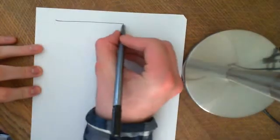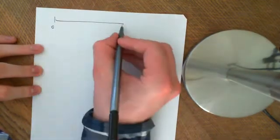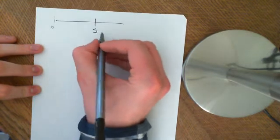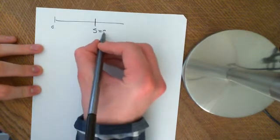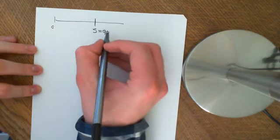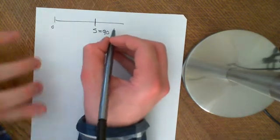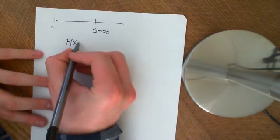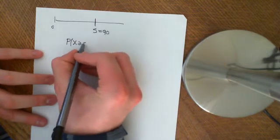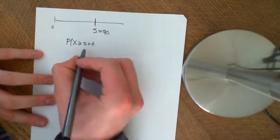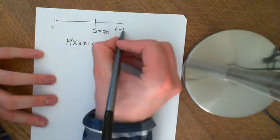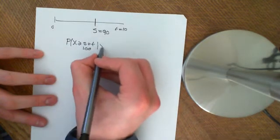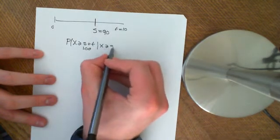Basically, this is saying that if you have lived for some s years — let's say s equals 90, so you are 90 years old — and you would like to know what is the probability that you will live greater than or equal to s plus t years, say t equals 10, so what's the probability that you will live greater than 100 years, given that you are 90?